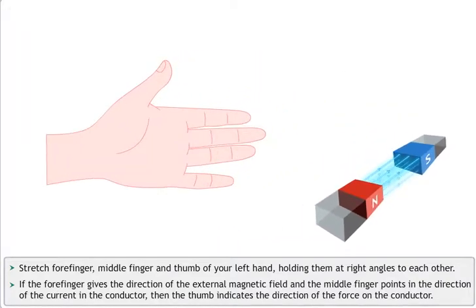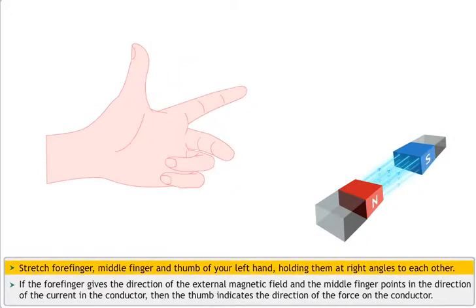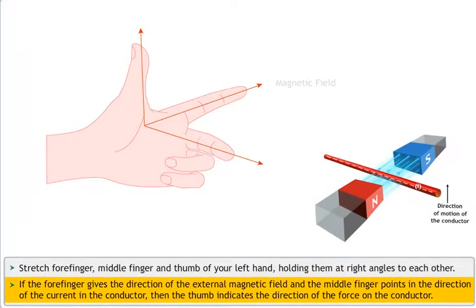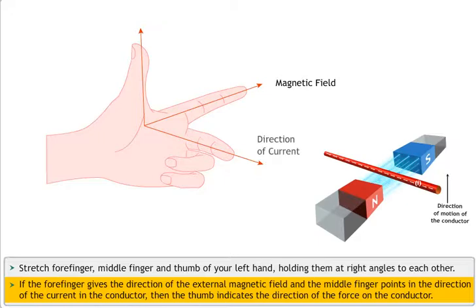To understand this rule, stretch the forefinger, middle finger and the thumb of your left hand, holding them at right angles to each other. If the forefinger gives the direction of the external magnetic field and the middle finger points in the direction of the current in the conductor, then the thumb gives the direction of the force on the conductor.